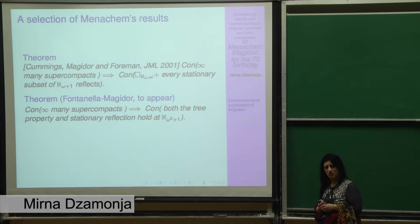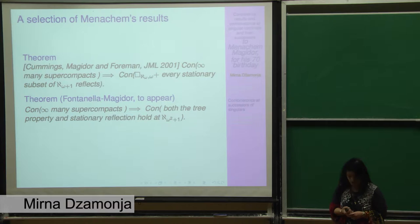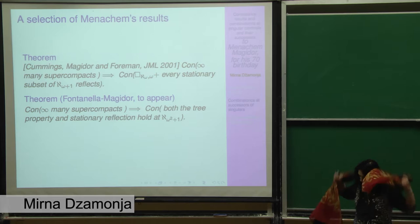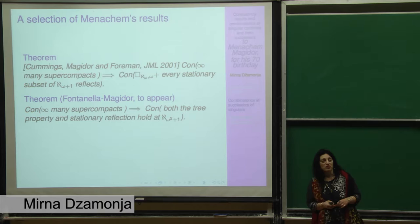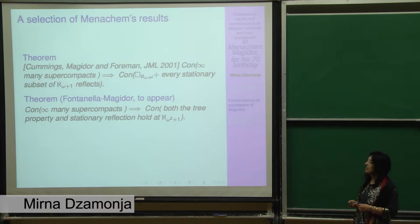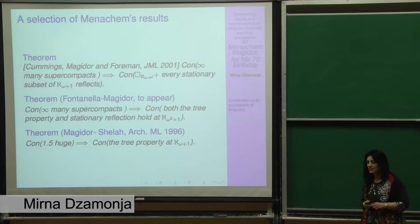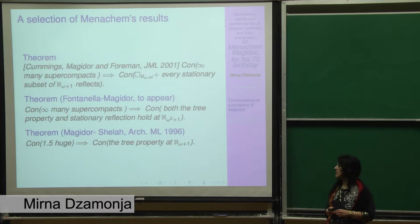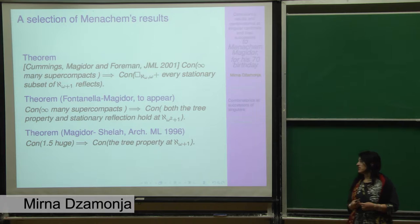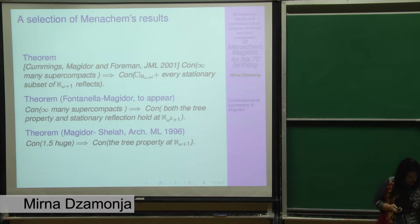Then more recent work, this is something to appear, worked with Laura Fontanella, which again from the same assumption shows that both the tree property and stationary reflection can hold at aleph omega squared plus one. We shall hear a lot about the tree property from Dima and James, so I won't dwell too much on this. But I will tell you that the first result about the tree property at successors of singulars, I think, is this paper from 1996 by Magidor and Shelah, in which they took an assumption, something between a huge and a too huge, and proved that the tree property can hold at aleph omega plus one.